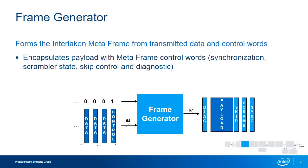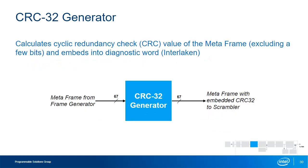The frame generator is enabled when the transceiver is configured to support the Interlaken protocol. It takes 64-bit data and a single-bit control word from the PCS FIFO interface and encapsulates it to form the Interlaken MetaFrame by attaching synchronization, scrambler state, and skip control words to the front of the payload and the diagnostic control word to the end. The CRC32 generator is also used for the Interlaken protocol — it calculates a CRC checksum across the entire MetaFrame from the frame generator, excluding framing bits, and embeds the checksum into the appropriate field in the diagnostic word, allowing transmission errors to be detected at the receiver.